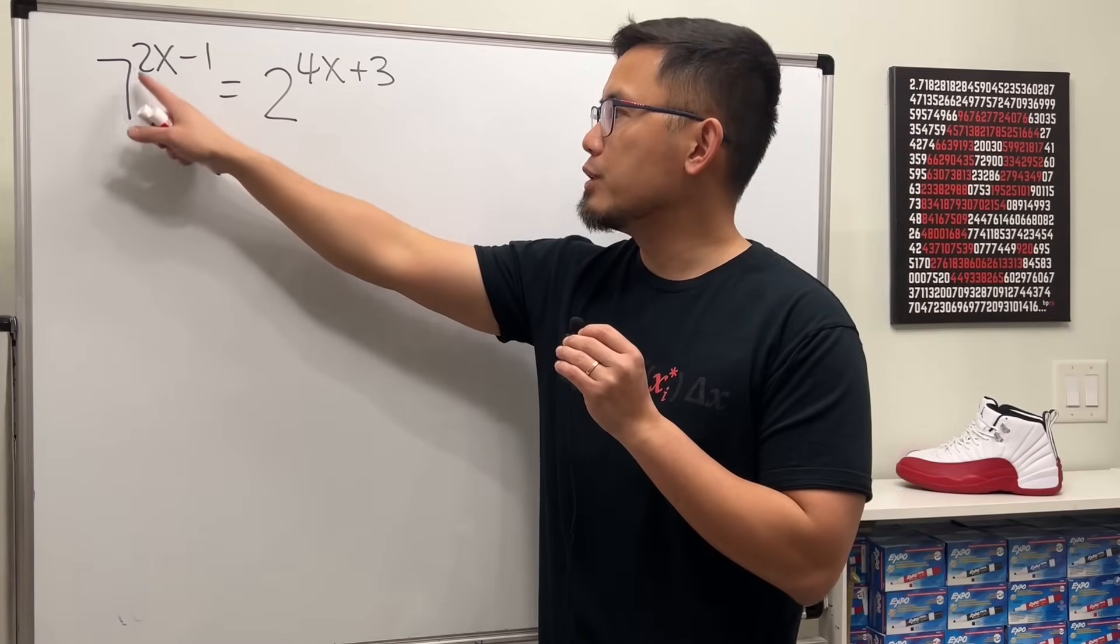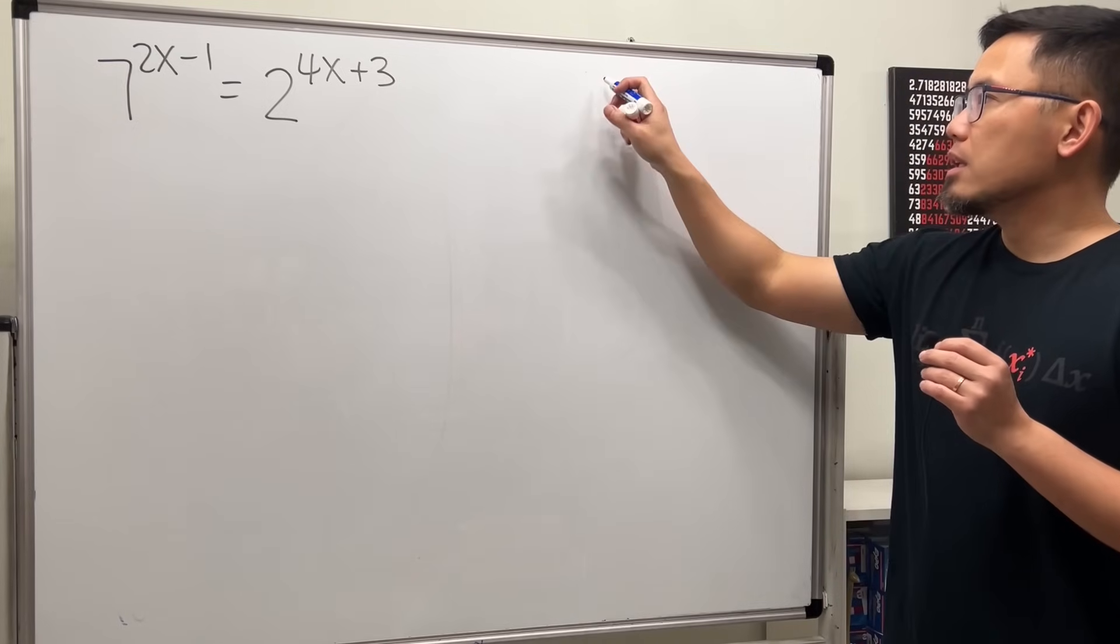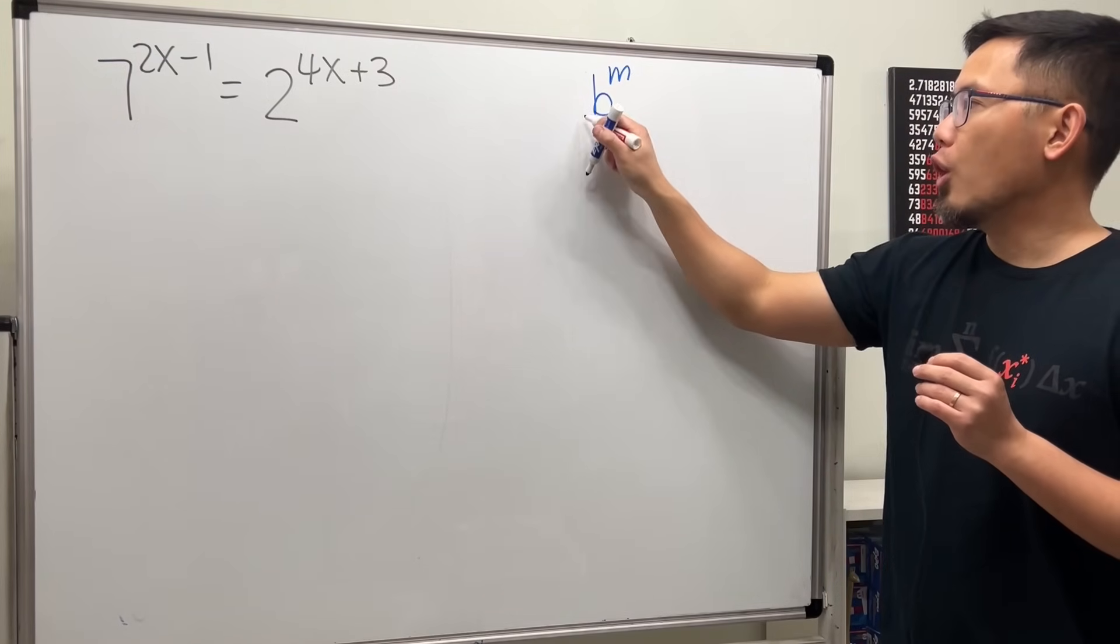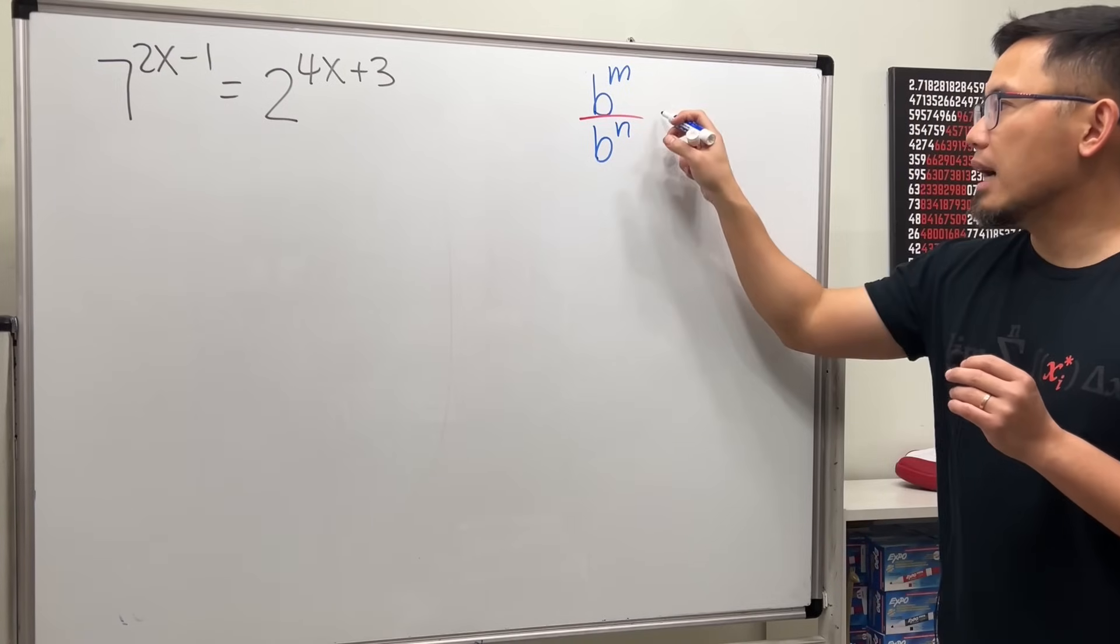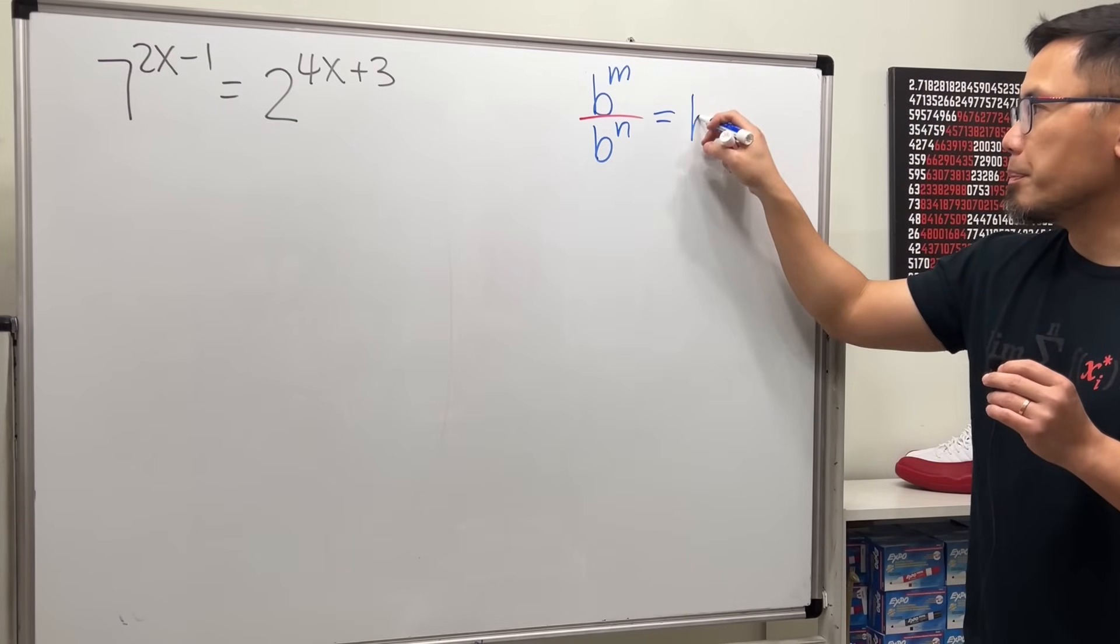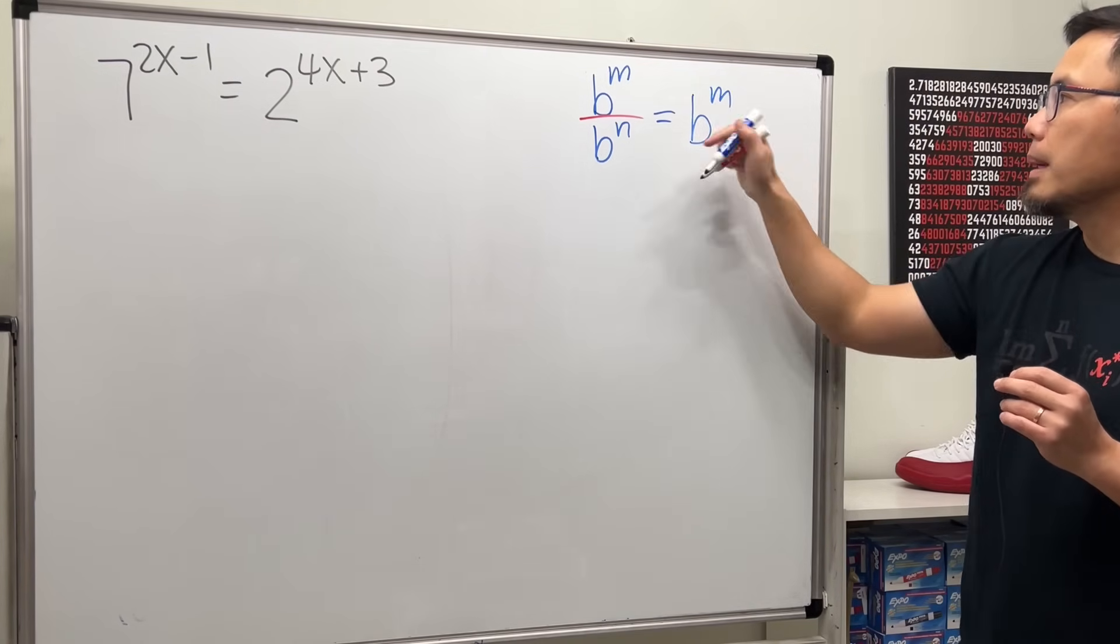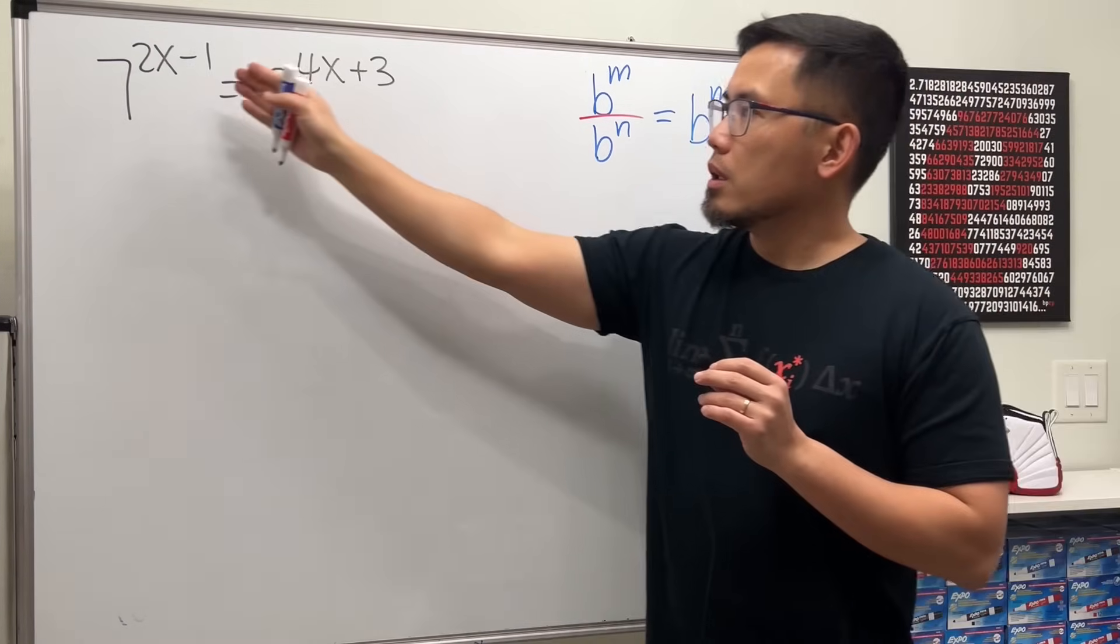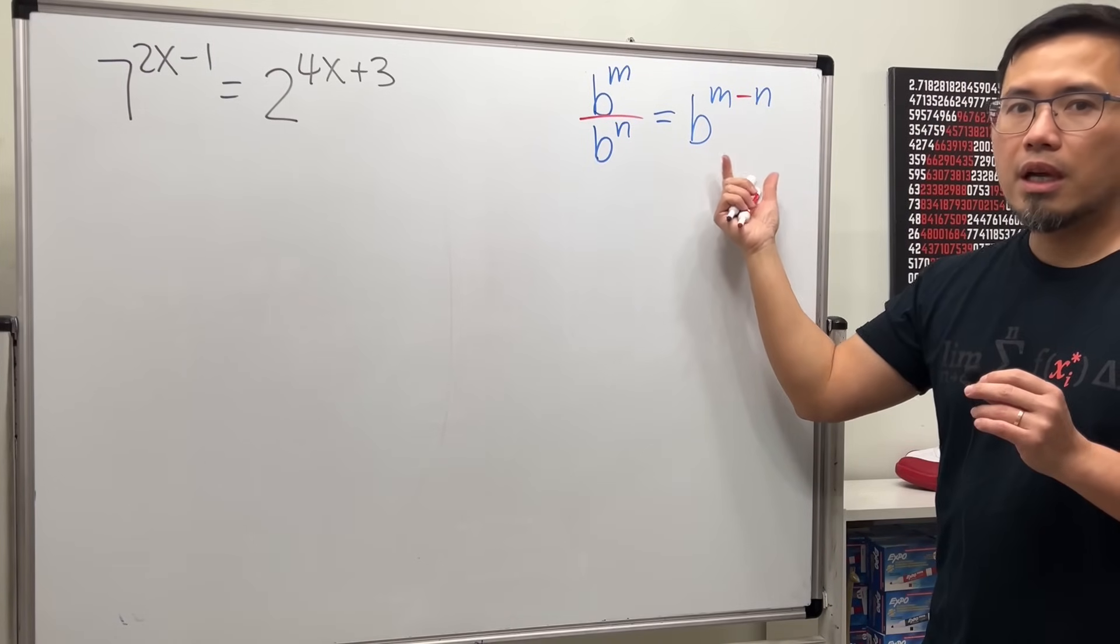Right here, we have 7 to the 2x minus 1. So let me remind you guys, if today we have some number b to some power m over some number b to some power n, this is the case that we will just have the base b and we subtract the exponents. The top one minus the bottom one. So look at this, we have 2x minus 1. It's just like this. And then do it backwards.